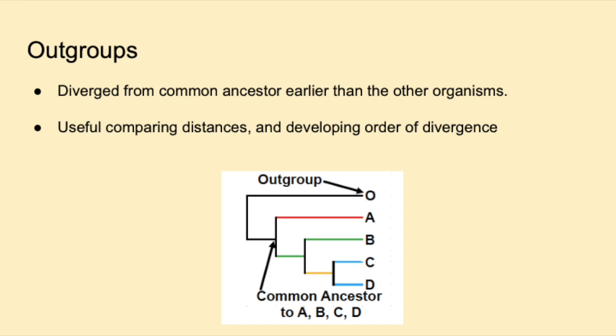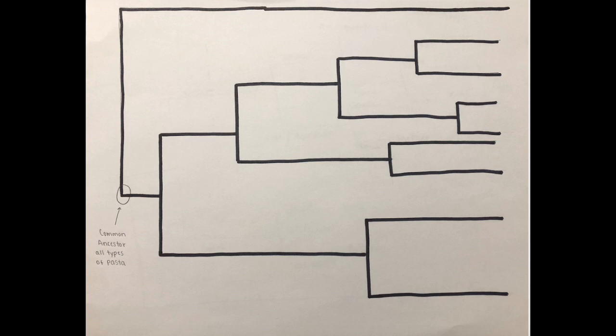In our tree, spaghetti is our outgroup. Our outgroup diverged from the common ancestor earlier than all other OTUs. The outgroup is useful in helping to compare distances between the other OTUs and developing an order of divergence.